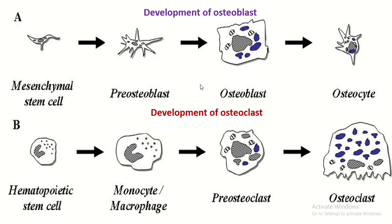The osteoblast develops from the mesenchymal stem cell, which is converted into a pro-osteoblast, then an osteoblast, then an osteocyte. The osteoclast develops from the hematopoietic stem cell via monocytes, then converted into pro-osteoclast and ultimately osteoclast. Osteoclasts are never converted into any other type of cell.